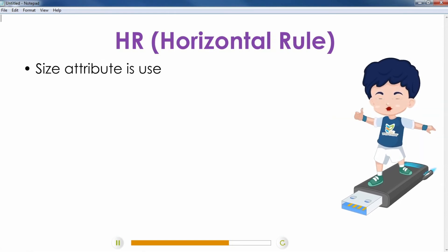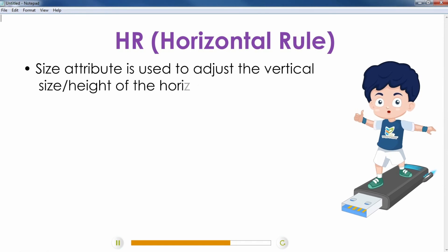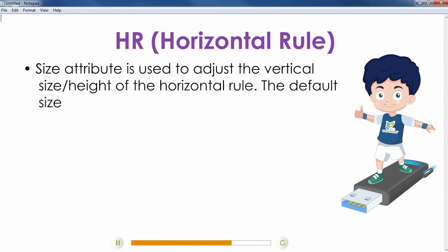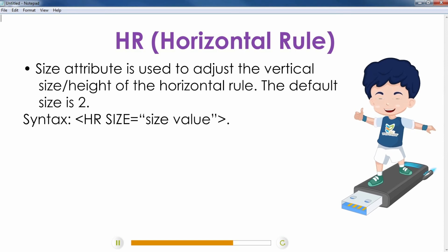Size attribute is used to adjust the vertical size or height of the horizontal rule. The default size is 2. Syntax: Hr size equals size value.